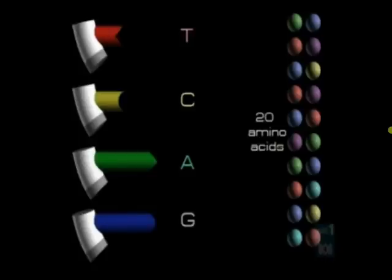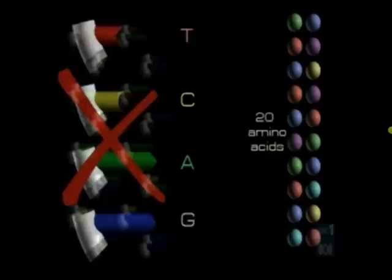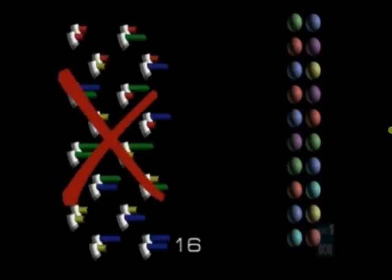It couldn't just be one to one, because four bases can't equal 20 amino acids. But what if the connection was two bases to one amino acid? That would allow a base code of four times four combinations, but 16 is still short of 20.